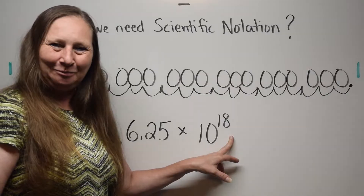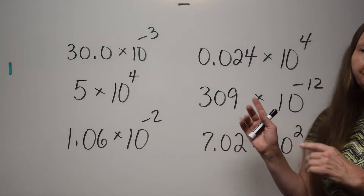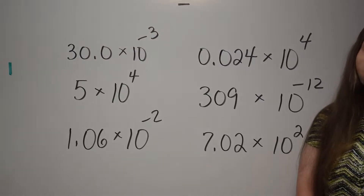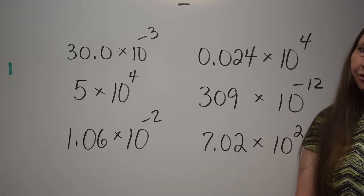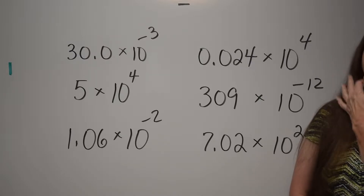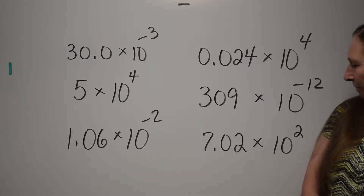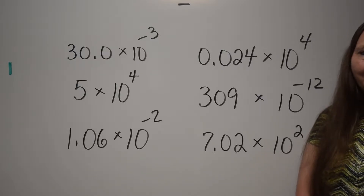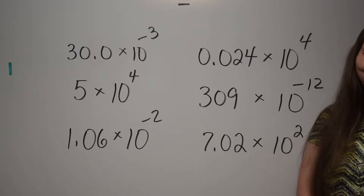Take a moment and figure out which of these numbers are written in correct scientific notation. Circle the answers — there are three of them that are written in correct scientific notation. Take a minute to do that. You can pause the video and then we'll go over the correct answers. Pause your video now.